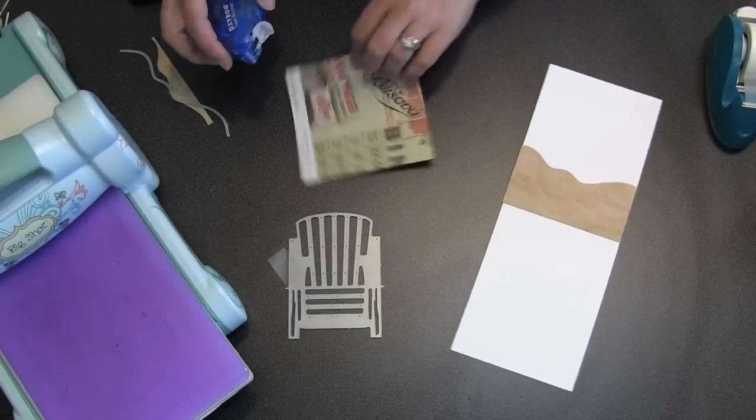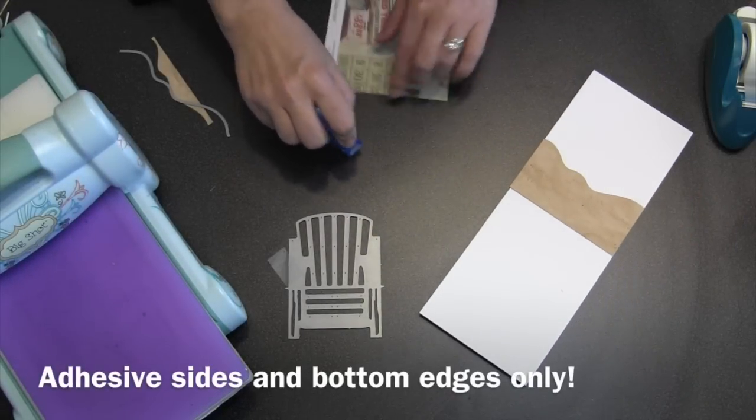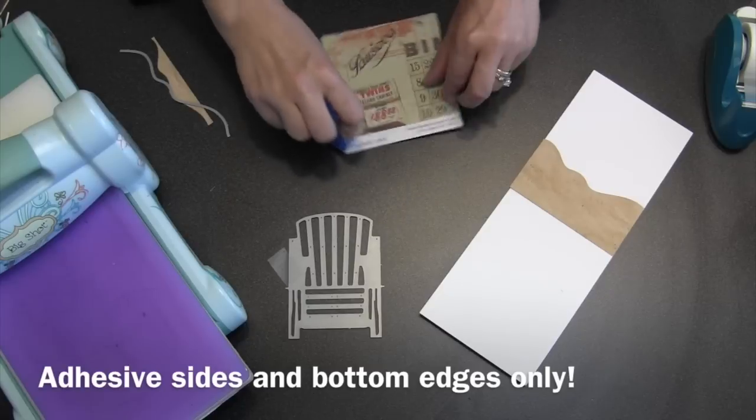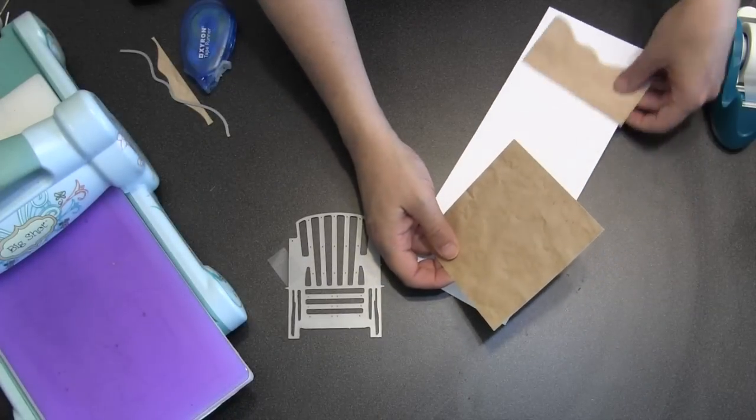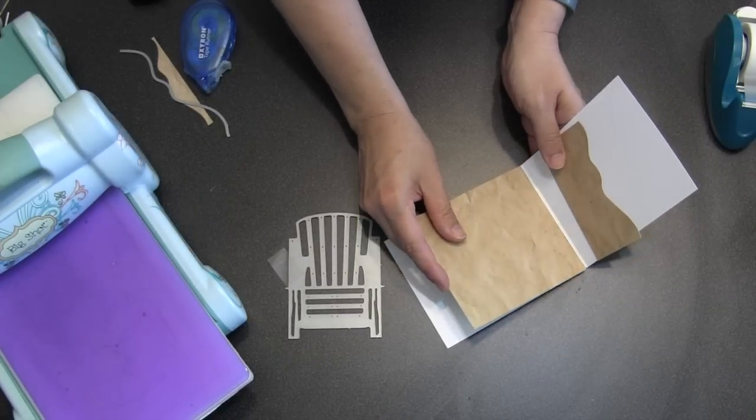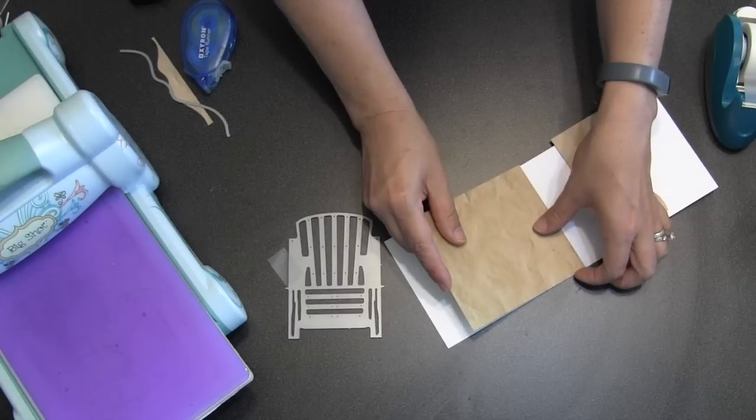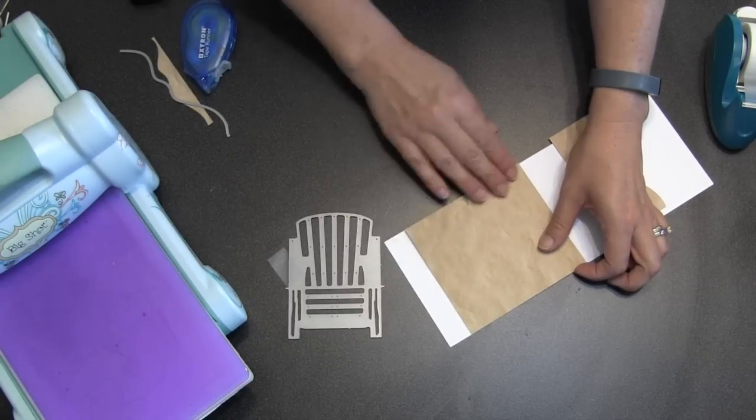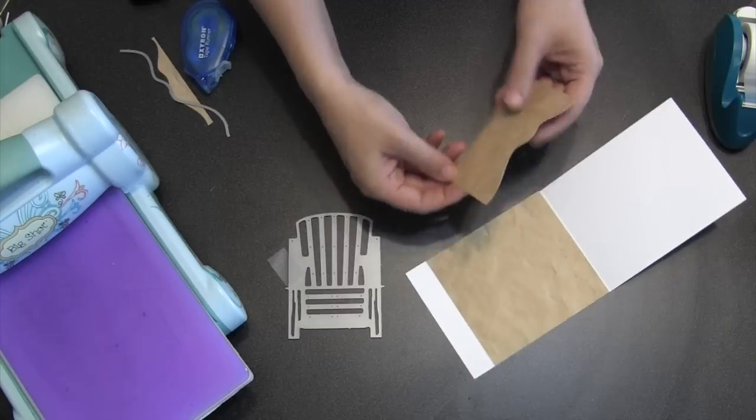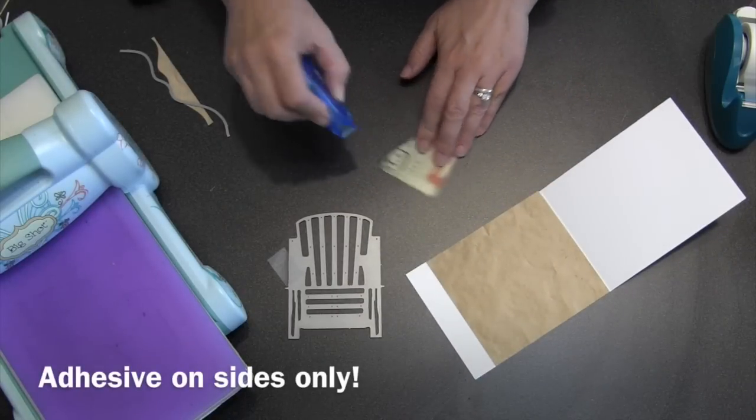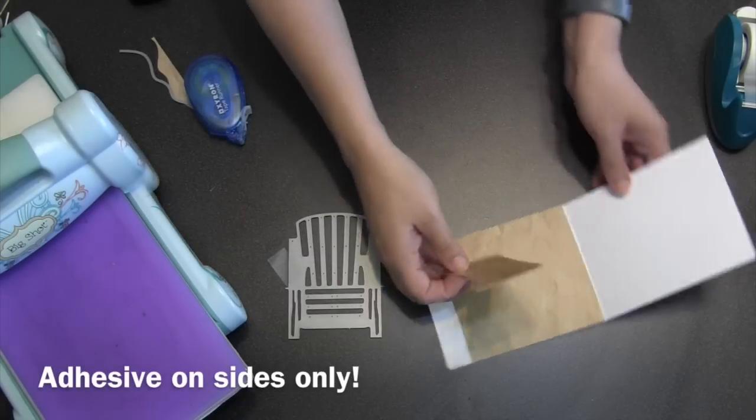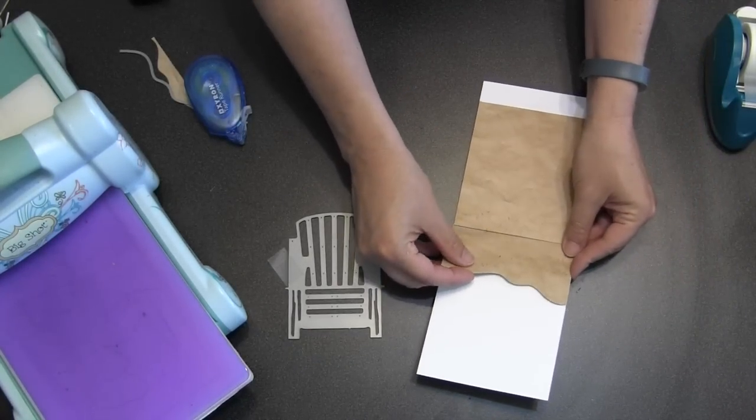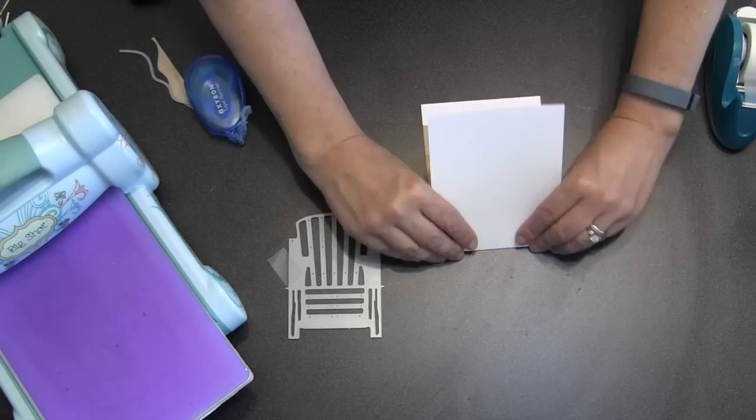I only need a tape runner to add these inside the card, but it is important that when I'm putting the bottom piece on I'm only using adhesive around the sides and the bottom edge, so nothing in the middle or along the top edge at all. When I put the top piece in, the sand piece, I'm going to use adhesive only on the sides and not along the top or the bottom edge at all.